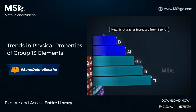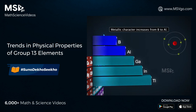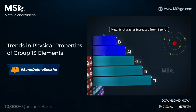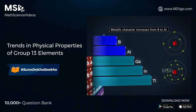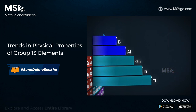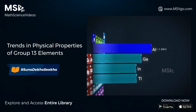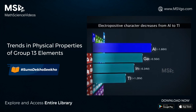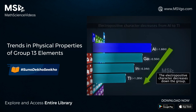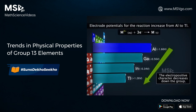Moving down group 13, the metallic character increases from boron to thallium. This is because boron is the smallest in size and has the highest sum of the first three ionization enthalpies. Aluminium, however, is able to lose all three electrons more easily owing to its greater size. The electropositive character then decreases from aluminium to thallium, which is reflected in their respective electrode potentials.